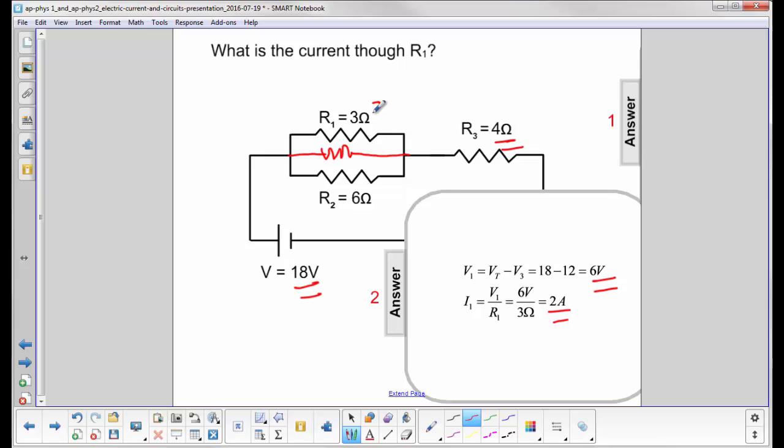Since we have 2 amps going through here, and we have 3 amps coming in, you can tell right now what's the current going through this bottom resistor. While it splits here, 2 goes up here, and 1 amp will go down there.